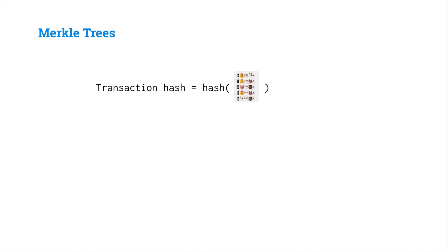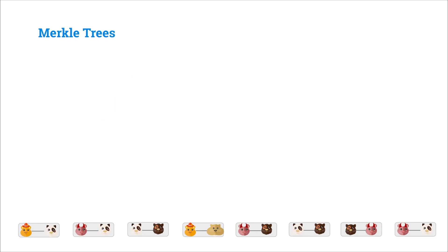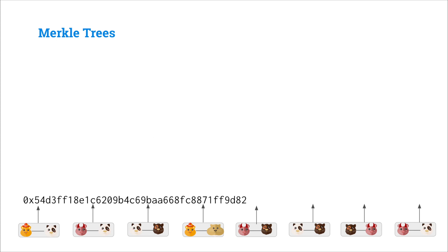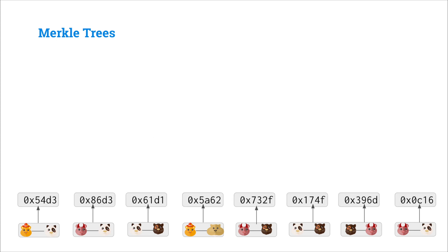Rather than just hashing our transactions to get a transaction hash for the block header, let's instead use what's called a Merkle tree. We start off with our thousands of transactions, only some of which are listed here, and we'll first hash each transaction. So we'll hash the transaction of Alice sending money to Jing and get the hash 54D3. Each transaction will point to its hash. Then we'll take each pair of hashes and hash them together.